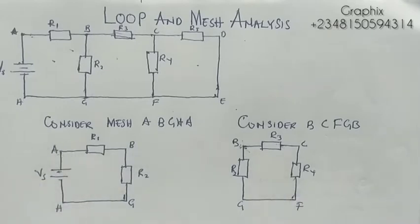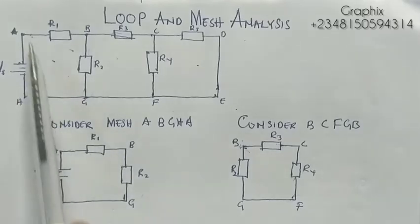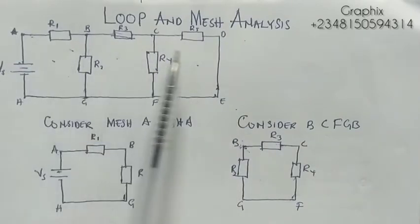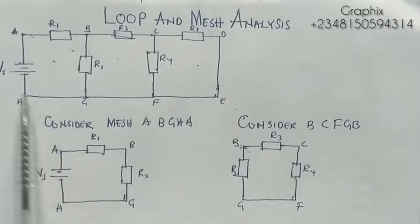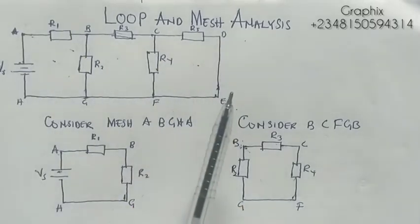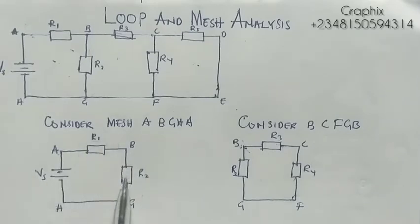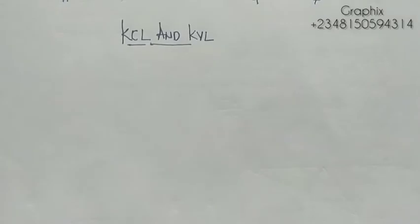A mesh is a closed part in a circuit with no other part inside. This larger circuit has other parts inside, so it is called a loop but it can never be called a mesh. But this one here has no other part inside, so it is called a mesh. It can also be called a loop, but the loop with other loops inside cannot be called a mesh.